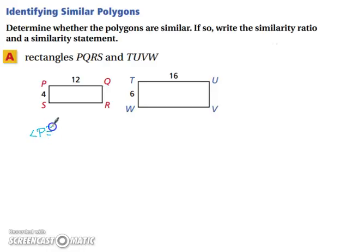So, we know angle P is congruent to angle T, angle Q is congruent to angle U, angle R is congruent to angle V, and angle S is congruent to angle W. Alright, so we have congruent angles. That was the first step to figuring out if something was similar.